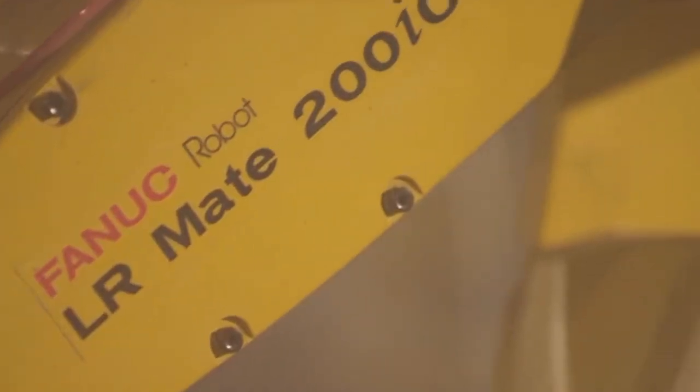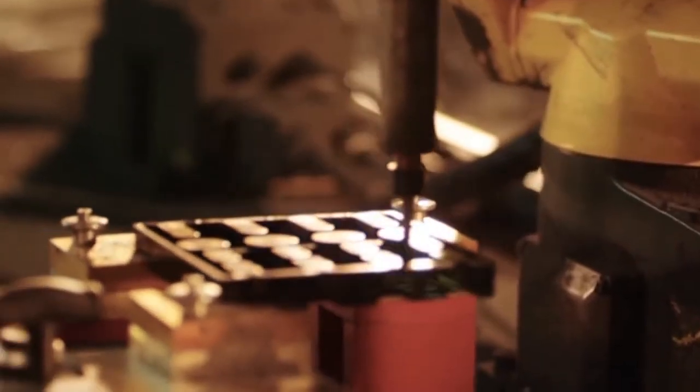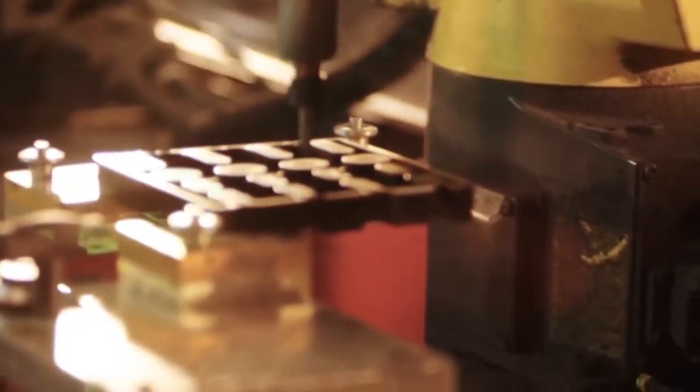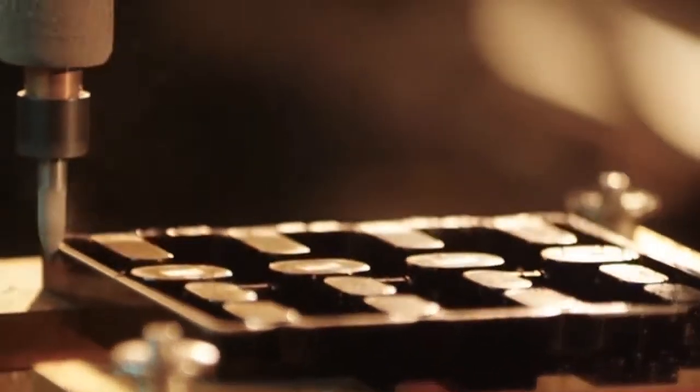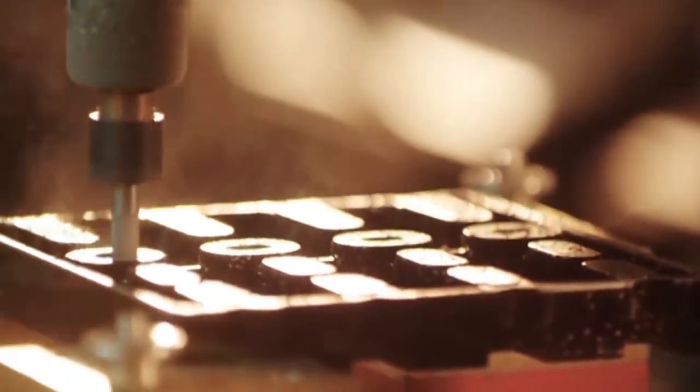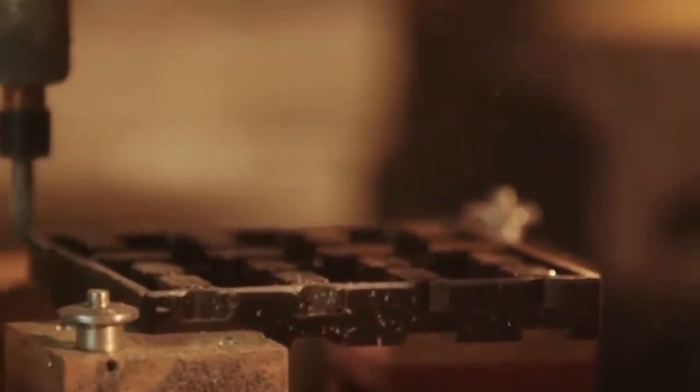After imaging, a linear actuator moves the part toward one of two FANUC LR Mate 200iC robots. The LR Mate robot calls the correct deflashing program and begins to process the part.